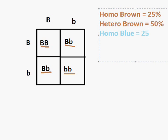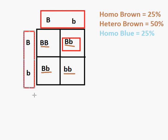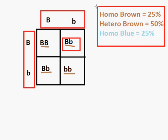and homozygous blue, 25%. So that's the difference between genotypes and phenotypes. Just remember genotypes as the letters, and phenotypes as what it looks like walking down the street.